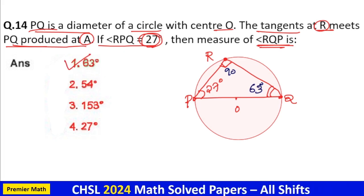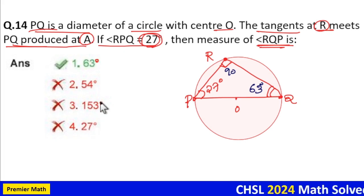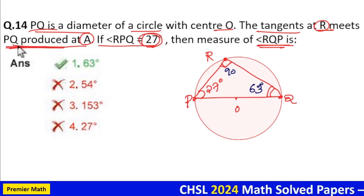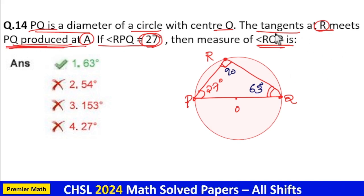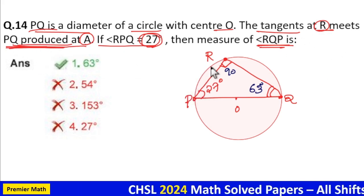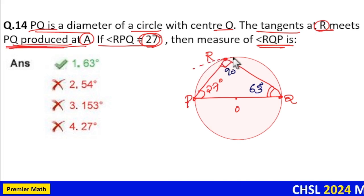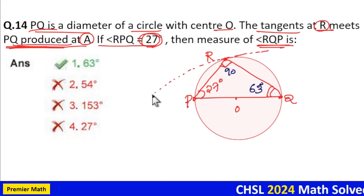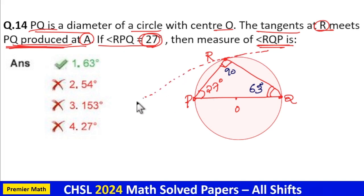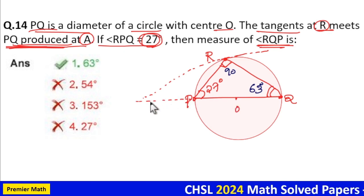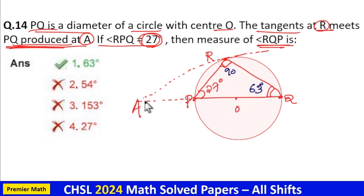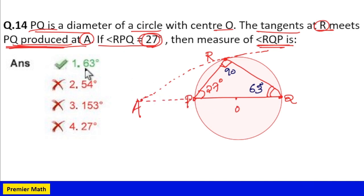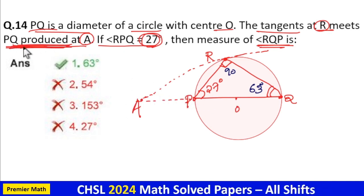Here actually you don't need to draw the tangent here. That is to mislead the question. Here tangent at R meets PQ produced at A. If this is the tangent, this tangent will meet PQ produced at A. If we are extending this PQ, now this is point A where the tangent meets. Actually we don't need this part. That is to mislead you, to confuse your diagram.